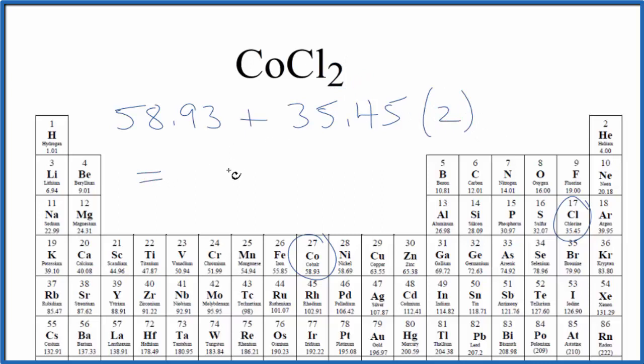So when we do the math, we find the molar mass for cobalt 2 chloride to be 129.83. And the units are grams per mole.